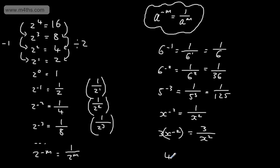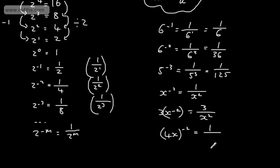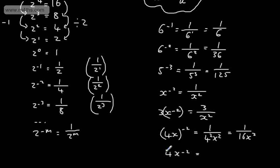If we had 4x raised to the power of minus 2 — note this is in brackets — this would give us 1 over 4 to the power of 2 multiplied by x to the power of 2. So we need 4 to the power of minus 2, giving 1 over 4 squared, and then x squared — we could write this as 1 over 16x squared. This differs from 4x to the minus 2, which gives us 4 lots of 1 over x squared, so there is a difference between the two.